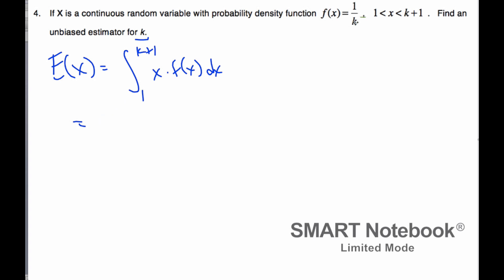f(x) is 1 over k, which is a constant, so I'll pull that out. Taking the integral from 1 to k plus 1 of x, I get 1 over k times x squared over 2, evaluated from 1 to k plus 1.